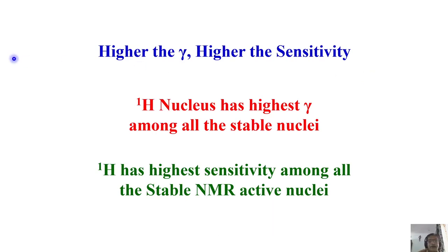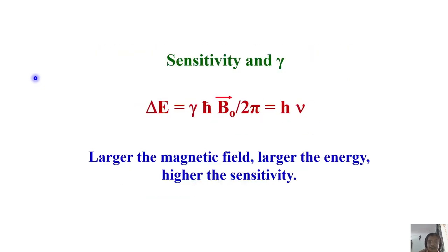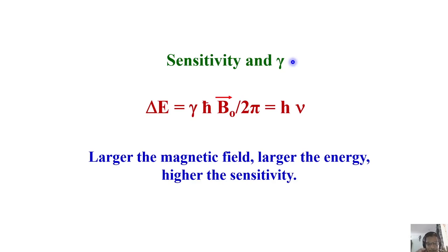To summarize: we can enhance sensitivity by playing with the magnetic field — when you double the magnetic field, there is nearly threefold rise in sensitivity in the realistic spectrum. Lowering temperature increases the population in the lower energy state and enhances sensitivity. Sensitivity also depends upon gamma — larger the magnetic field, larger the energy, and higher the sensitivity. How sensitivity depends on gamma will be discussed in the next class.